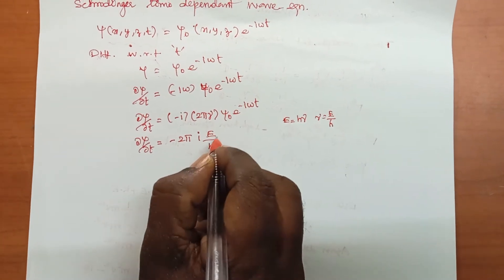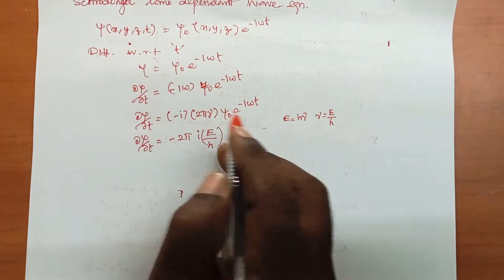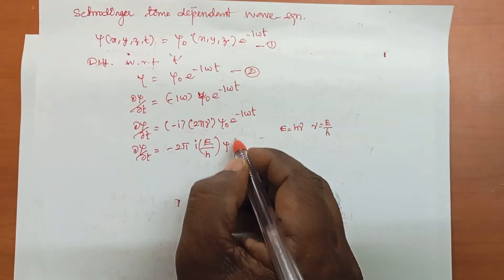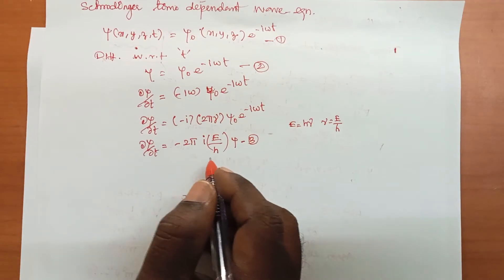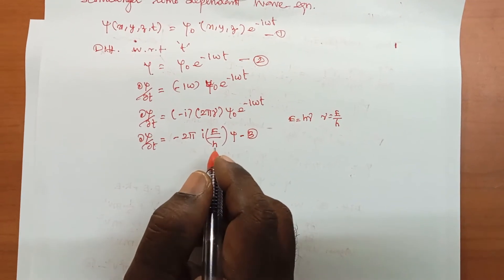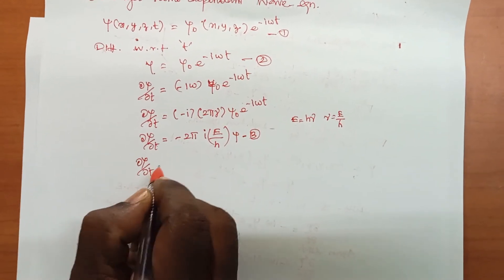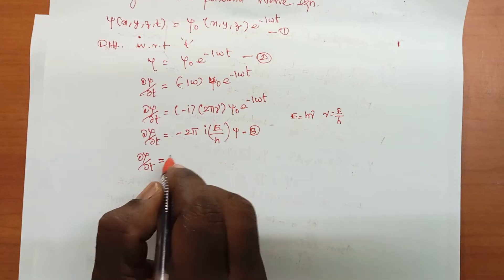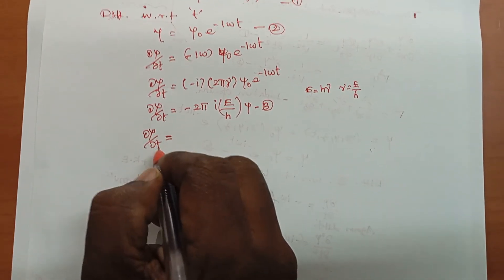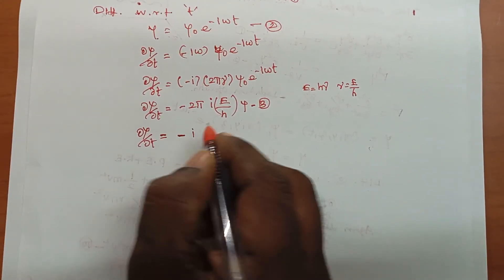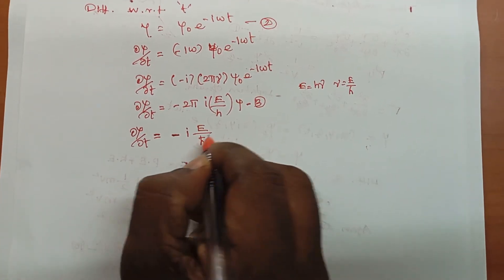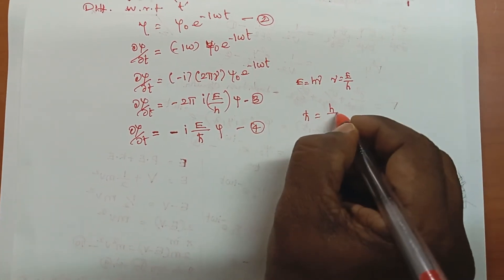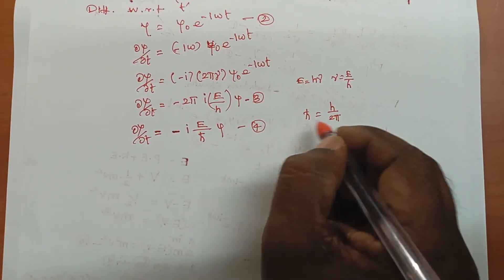Substituting ν = E/h, we get ψ₀ e to the power iωt equals ψ. This gives us equation 4: ∂ψ/∂t is equal to minus iE/ℏ into ψ, where ℏ = h/2π.